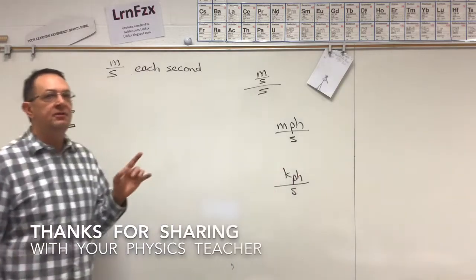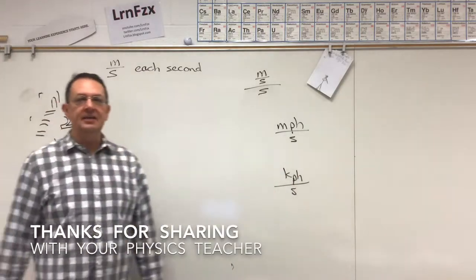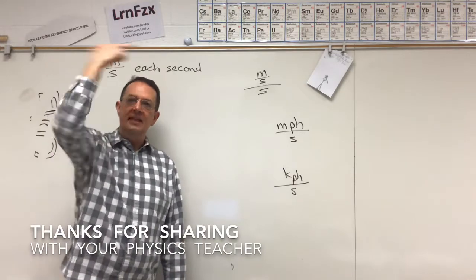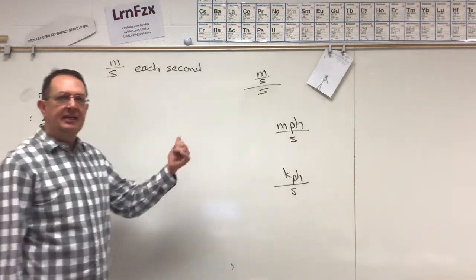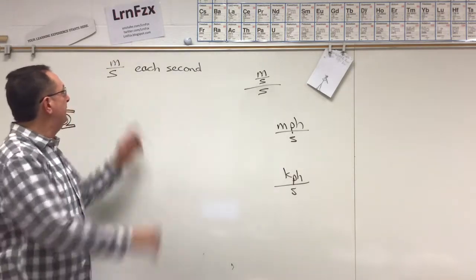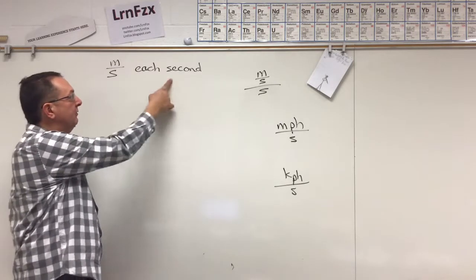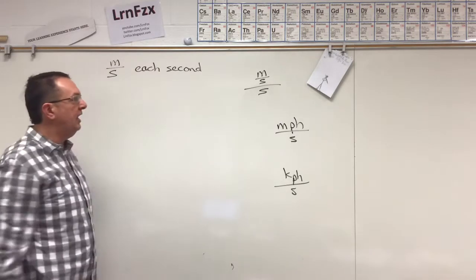Meters per second squared, get rid of it. What we should be using is something like meters per second each second. Written out like that. If you write meters per second each second out like that, you're like, oh, well, it's the change of velocity over time. The rate of change of velocity. Okay, okay.